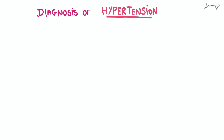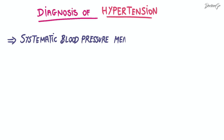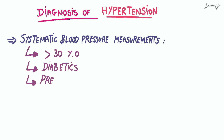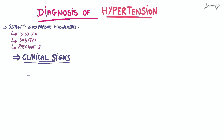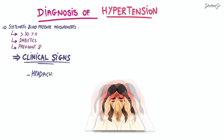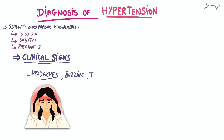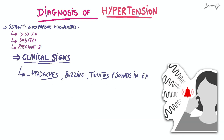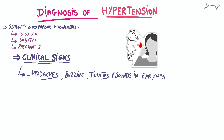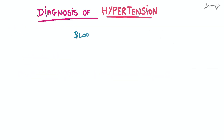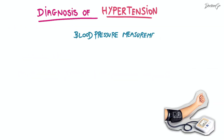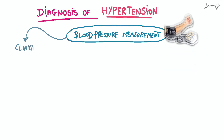Systematic screening is recommended for patients over 30 years old, diabetics, and pregnant women. Hypertension may be indicated by neurosensorial signs like headaches, buzzing, or tinnitus — the perception of sounds in the ear or head without any external sound source. Three measurement methods are used to measure blood pressure.